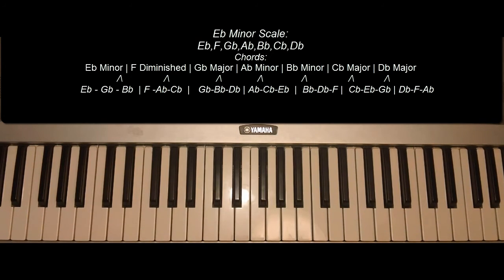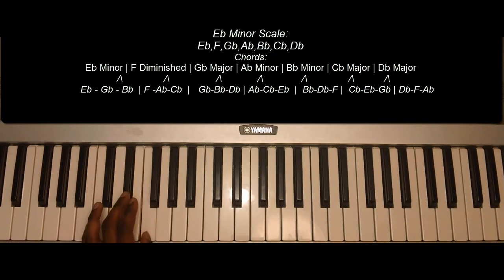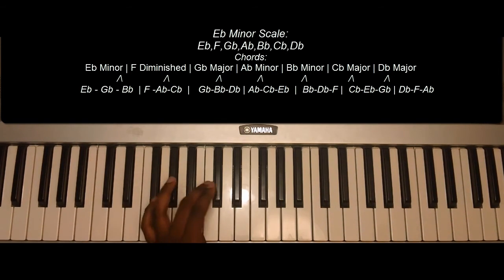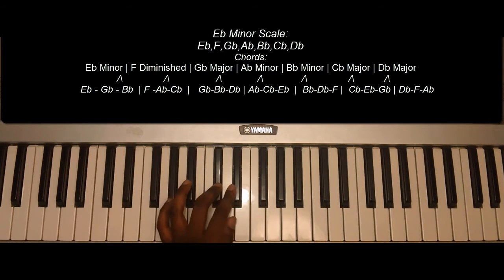Once again, the E-flat minor scale is as follows: E-flat, F, G-flat, A-flat, B-flat, C-flat, D-flat, and E-flat.